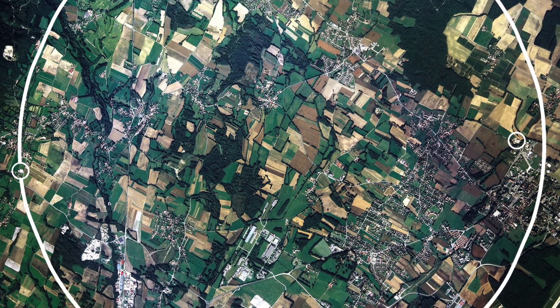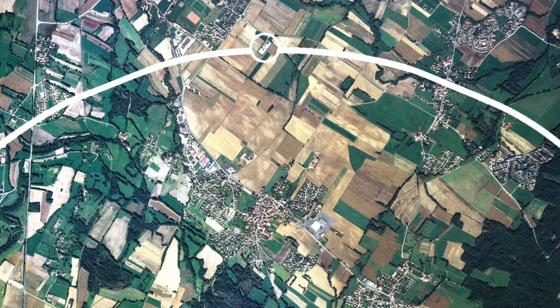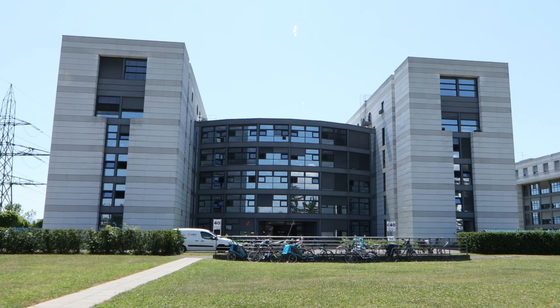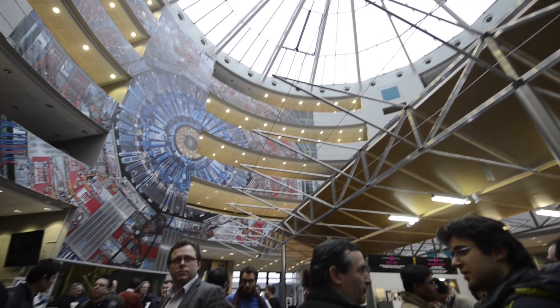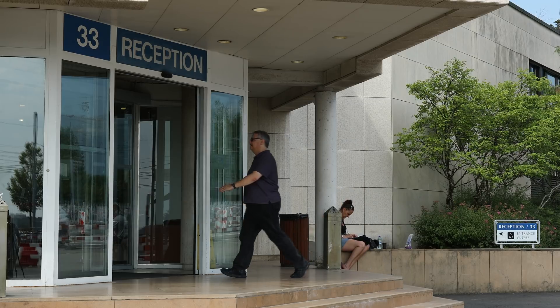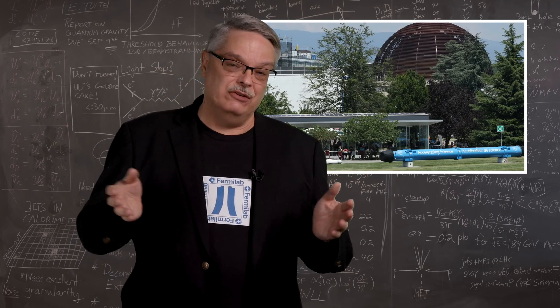There are four detectors arrayed around the LHC, and the one that Fermilab scientists are working on is called the Compact Muon Solenoid, or CMS. Three thousand scientists from around the world have joined together to try and uncover nature's mysteries. And together, we've made thousands of measurements, published hundreds of papers, and are looking forward to several decades of future research.